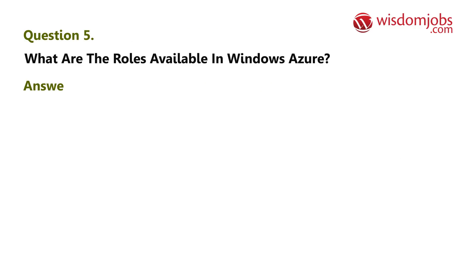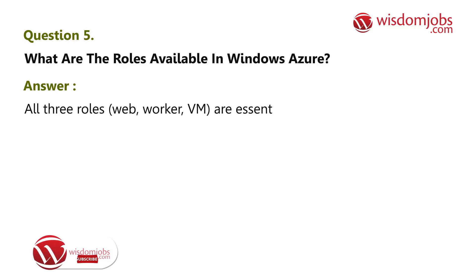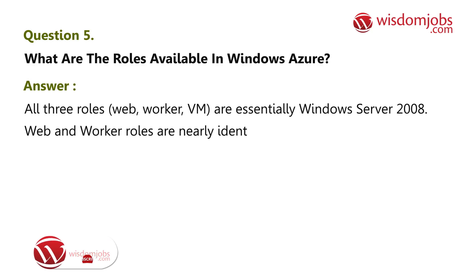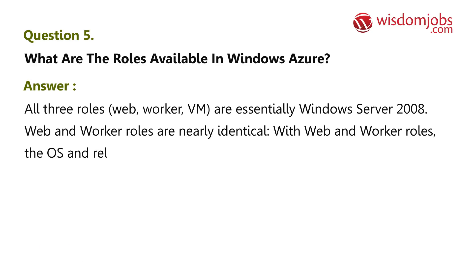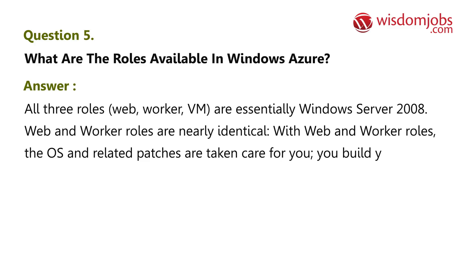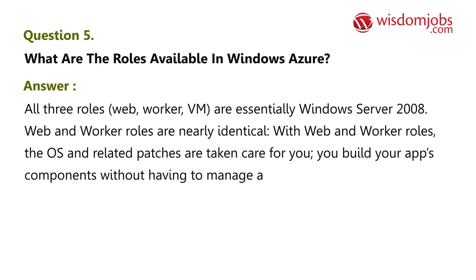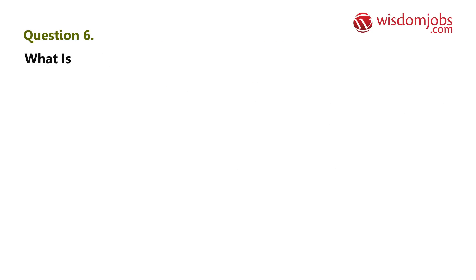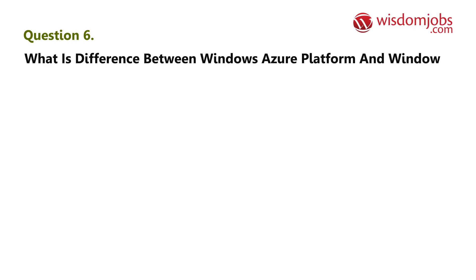Question 5: What are the roles available in Windows Azure? Answer: All three roles — Web, Worker, and VM — are essentially Windows Server 2008. Web and Worker roles are nearly identical; with these roles, the OS and related patches are taken care of for you, and you build your app components without having to manage a VM.